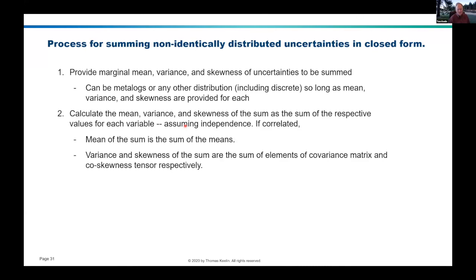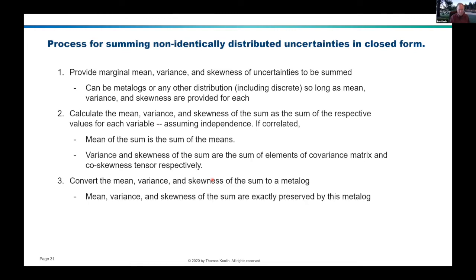They could even be results of previous simulations — the input variables can be anything; they don't have to be metalogs. You calculate the mean, variance, and skewness of the sum as the sum of the respective means, variances, and skewnesses for each variable. That's if they're independent; if they're correlated, then you do the covariance matrix steps as I mentioned. Then you convert the mean, variance, and skewness of the sum to a metalog, and that metalog preserves the mean, variance, and skewness exactly — that's the guarantee, so long as it's feasible.